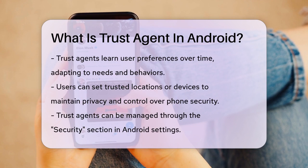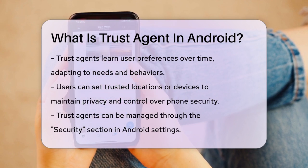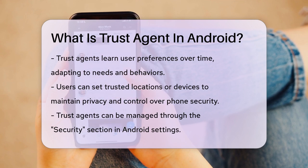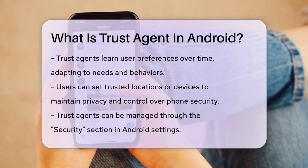Trust Agents also offer better control over your privacy. You can set trusted places or devices, ensuring your phone stays unlocked only in safe situations. If you're concerned about security, you can manually control when your phone locks and unlocks.